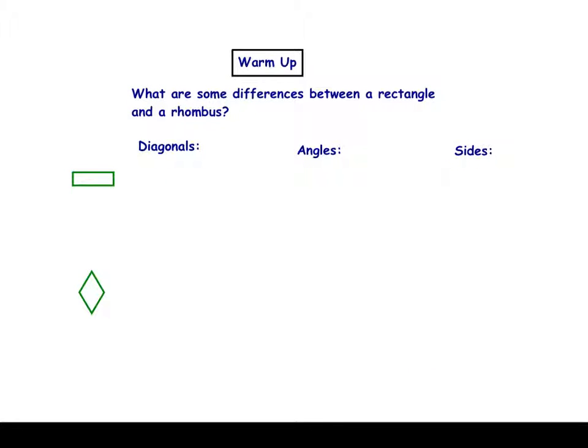Hello, period 9. I couldn't be in class today, so I figured I would videotape the lesson so you can keep up with period 5. Today we're going to prove that a quadrilateral we're given is either a rectangle or a rhombus.